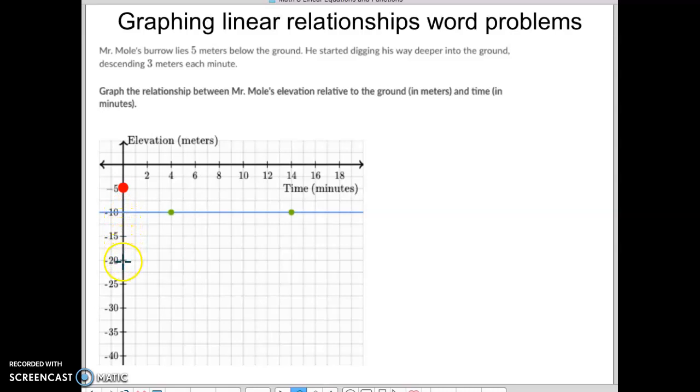So if we go down 15 from here, five, ten, fifteen, and that was in five minutes, so one, two, three, four, five minutes right here. We can put our second point right here. Hopefully that makes sense. Again, you went down three meters per minute, so that means in five minutes' time, you would go down an additional 15 feet below, or meters I guess, in that amount of time.